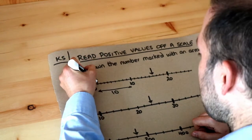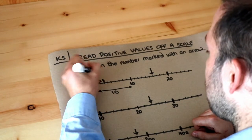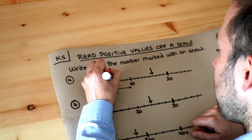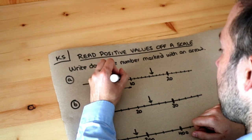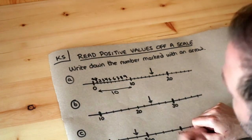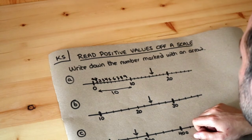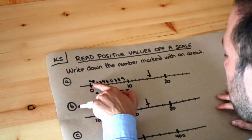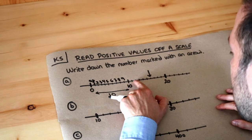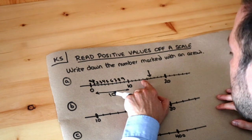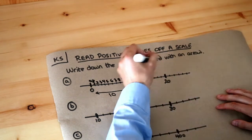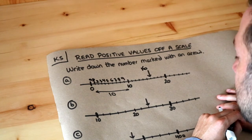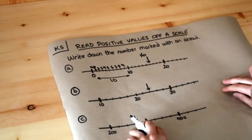So it must be that these marks are going up by one each time. Let's check: 1, 2, 3, 4, 5, 6, 7, 8, 9, 10 — that's right. So we just continue going up in ones from 10: 11, 12, 13, 14, 15, 16. So that number on the number line is 16.